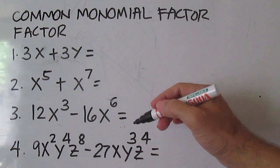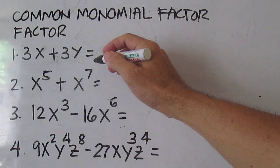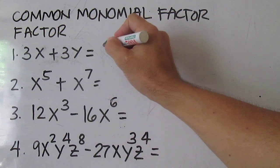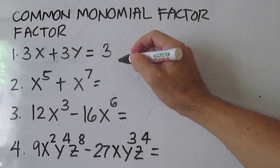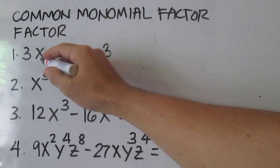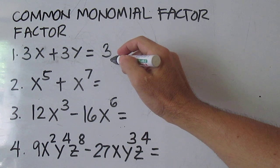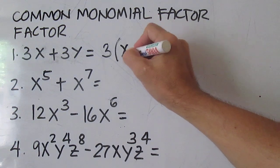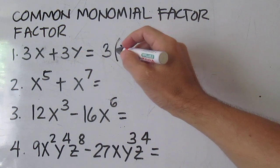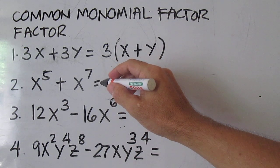Let's factor these polynomials by finding the common monomial factor. For number one, the common monomial factor is 3. To get the other factor, just divide each term by the CMF, or common monomial factor. So 3x divided by 3 is x, and 3y divided by 3 is y.